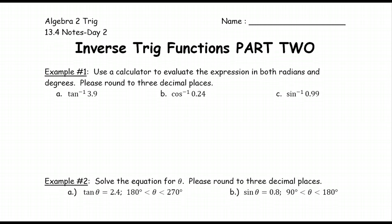In example one we're going to use a calculator to evaluate the expression in both radians and degrees. Please round to three decimal places. So tan inverse of 3.9. Remember anytime you have an inverse trig function you're looking for an angle. So we want to figure out what this angle is, the one who had a tangent of 3.9.